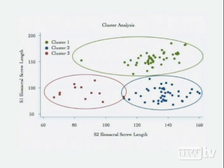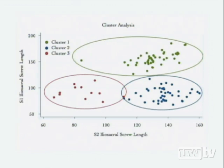The three clusters were defined by iliosacral screw corridor lengths in the upper and second sacral segments. Most patients could accommodate a long screw in both segments — nearly transsacral. A second large group could only pass a short upper sacral segment screw but had a long corridor in the second sacral segment. A smaller group had only short screw corridors in both segments.